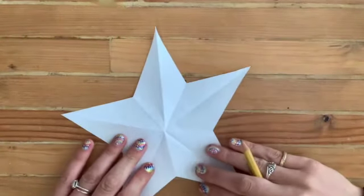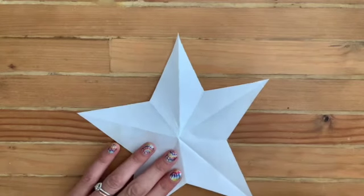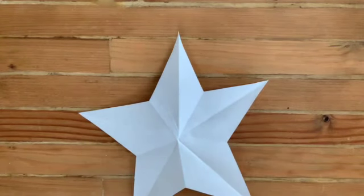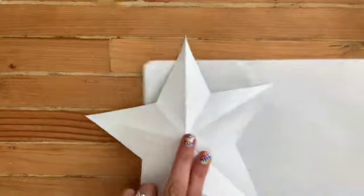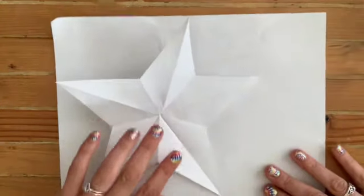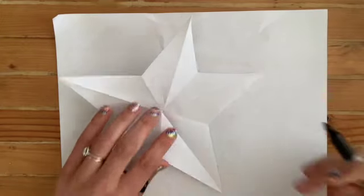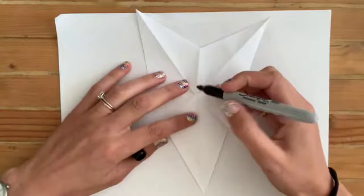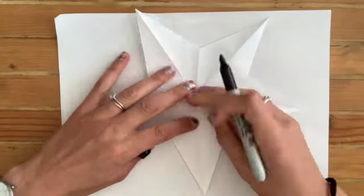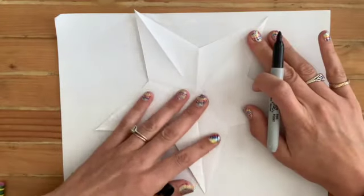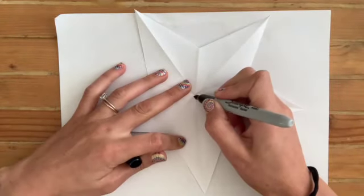Now that you have your star made you are ready to start decorating. I'm going to put a scrap piece of paper underneath my star so that as I'm using my Sharpie I do not get it on the table, and I'm going to start with first tracing over the creases. It might help to flatten out the star and then you can trace down.